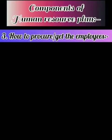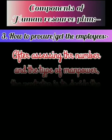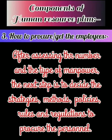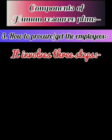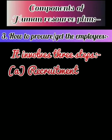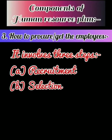The third component of Human Resource Planning is how to procure or get the employees. After assessing the number and type of manpower, the next step is to decide the strategies, methods, policies, rules, and regulations to procure the personnel. It involves three steps: recruitment, selection, and training.